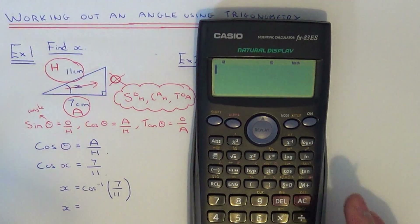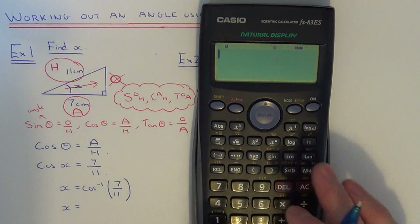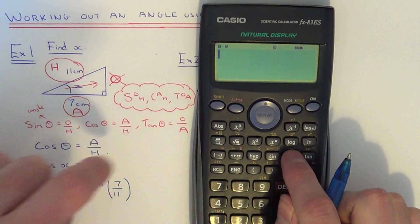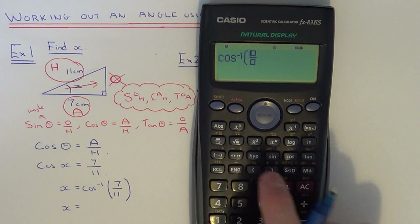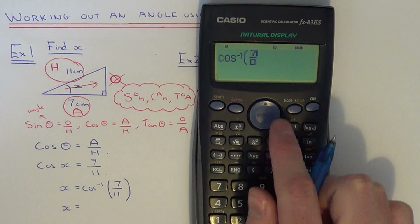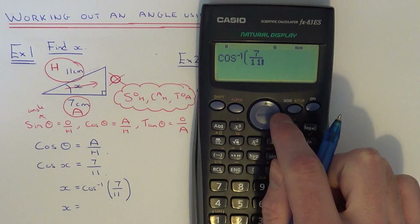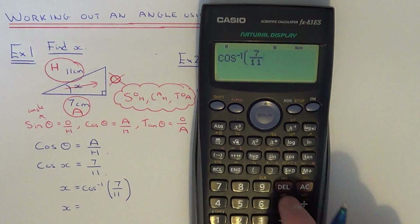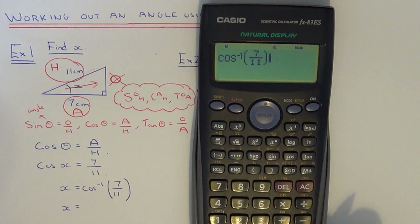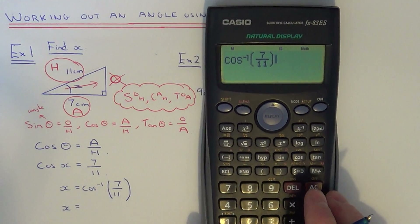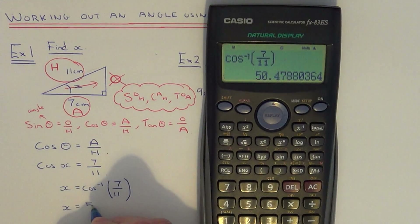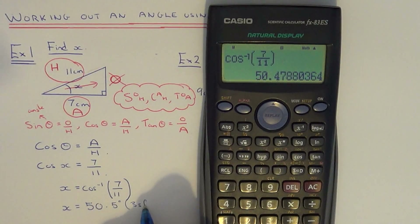Get your scientific calculator and make sure you've got it in degrees. Go shift cos, use your fraction button and type in 7 over 11. If you haven't got a fraction button, just put 7 divided by 11 — make sure you close the bracket, because on some calculators you won't get the right answer. That converts our fraction into an angle, so angle x is 50.5 degrees to three significant figures.